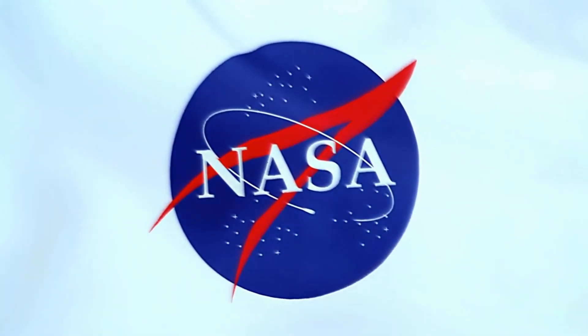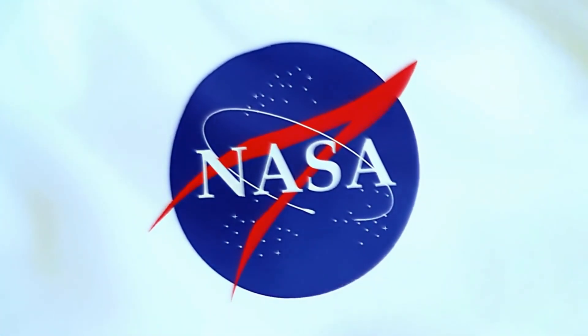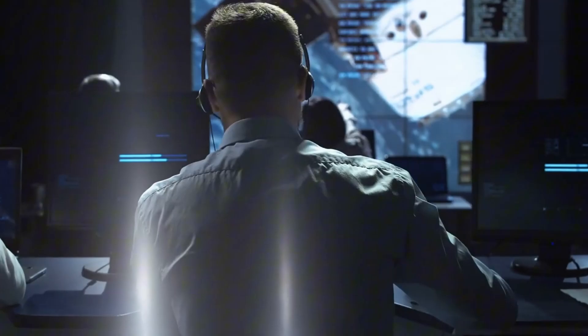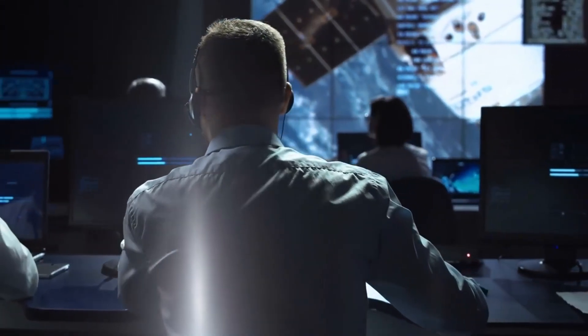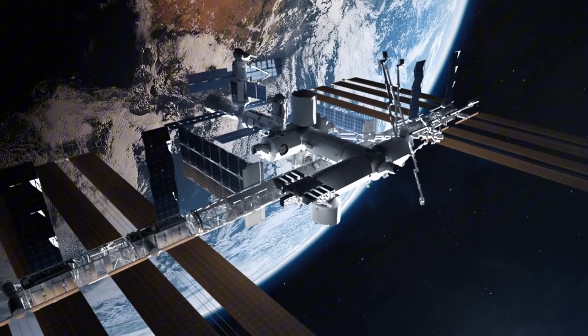The space station was approaching what NASA calls red lines on essential supplies like food and water. These aren't arbitrary limits. They're carefully calculated thresholds that ensure the crew's safety even in worst-case scenarios, like if a resupply mission fails or gets delayed. Let me put this in perspective.